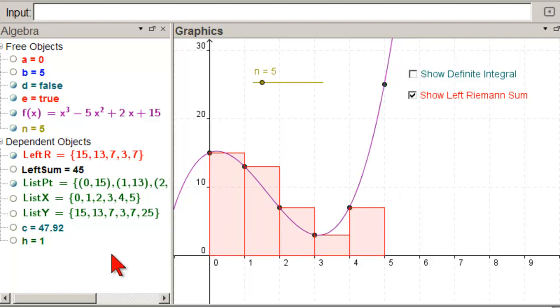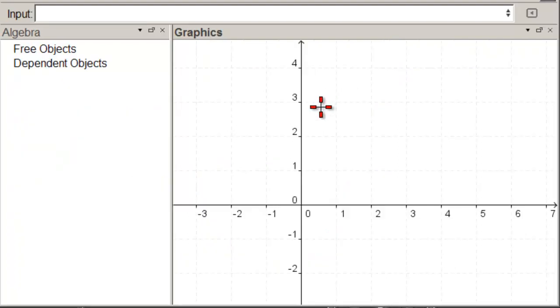The hardest thing is to do this left R, that sequence. Everything else is very basic. So here is our blank worksheet. We put the input bar at the top so that we can see it.